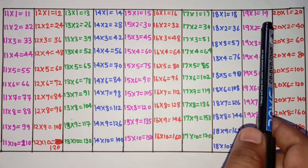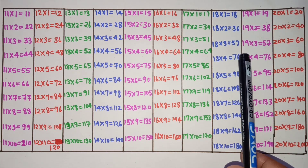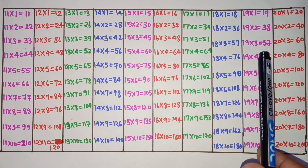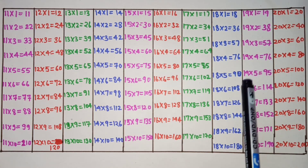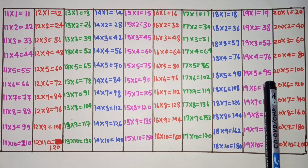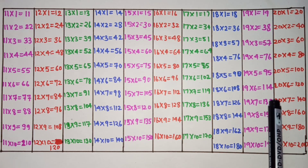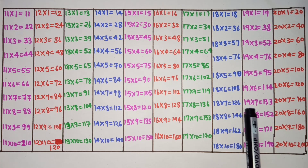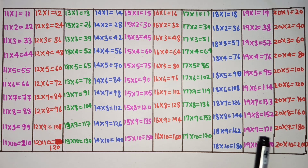19×1 is 19, 19×2 is 38, 19×3 is 57, 19×4 is 76, 19×5 is 95, 19×6 is 114, 19×7 is 133, 19×8 is 152, 19×9 is 171, 19×10 is 190.